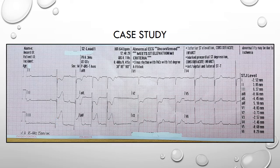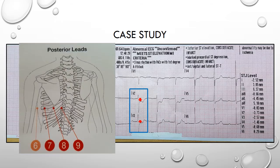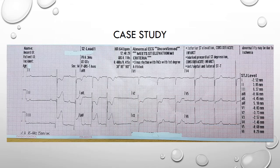We also have ST depression in leads V2 and V3 with tall R waves and upright T waves, which suggest posterior involvement. Normally we would go ahead and record V7 to V9, but if you look at lead V6 we can see some slight ST elevation. Together with the findings in V2 and V3, we can say there is posterior extension, because lead V6 is positioned towards the posterior leads in the mid-axillary line.